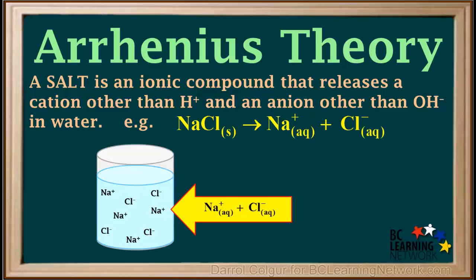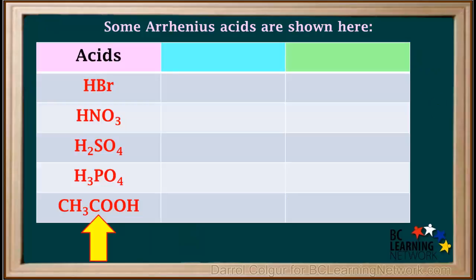A few Arrhenius acids are shown here. Notice their formulas start with H. This is the hydrogen atom they lose as H+ when they dissociate in water. In acetic acid, which is often written as CH3COOH, the H that the acid loses is written at the end of the formula instead at the beginning. Organic acids are often written this way. You just have to watch for the COOH at the end of the formula in order to recognize these as organic acids.